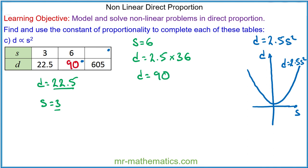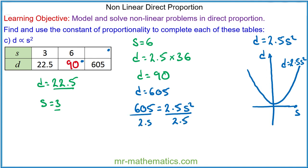And finally, when d is equal to 605, we have 605 is equal to 2.5s squared. We'll divide both sides by 2.5, giving s squared is equal to 242. We'll take the square root of both sides, so s will be approximately 15.6.